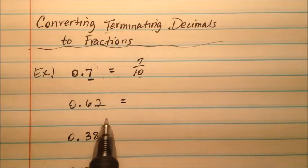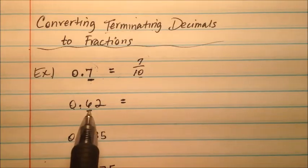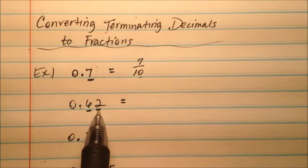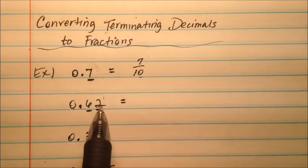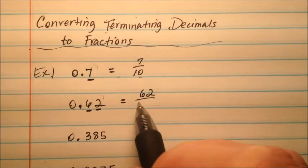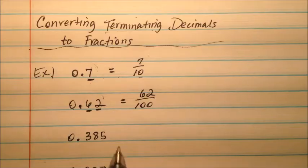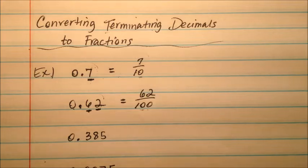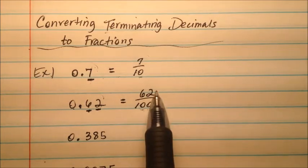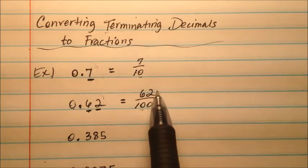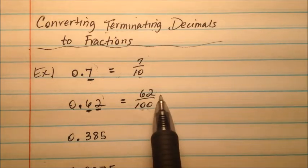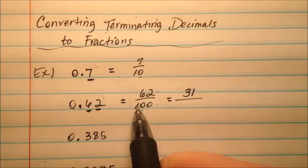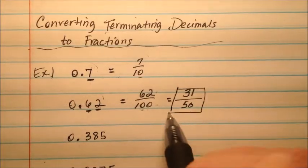Our second example, 0.62, so we have two decimal digits that are being used. We have the tenths place and the hundredths place. So when we read this, we're going to read it as 62 hundredths. So we'll put 62 over 100. Again, we're using two decimal digits, and we have two zeros in the denominator. I notice on this 62 over 100, I can reduce that, because both the numerator and the denominator are even. So let's divide a 2 out of both of those. 62 divided by 2 is 31, and 100 divided by 2 will be 50.